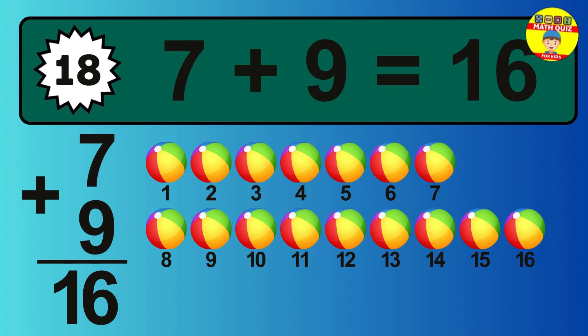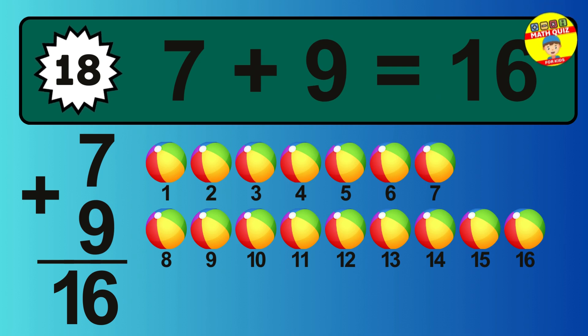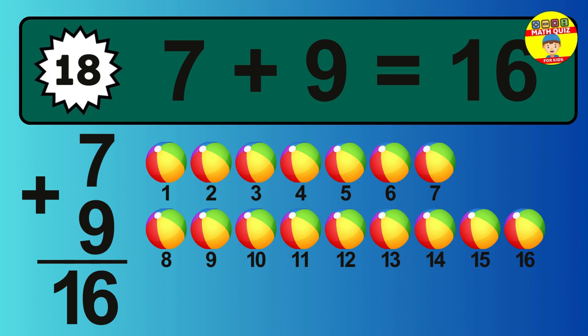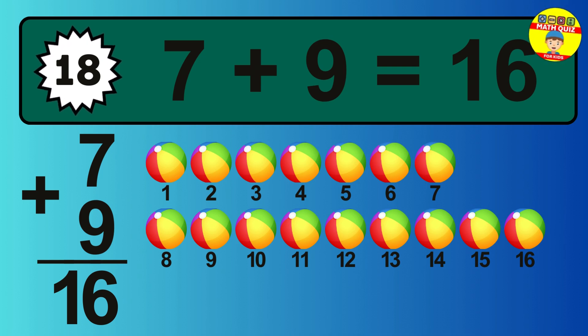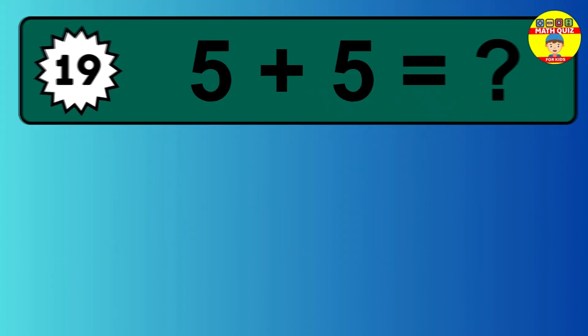Let's count it: 1, 2, 3, 4, 5, 6, 7, 8, 9, 10, 11, 12, 13, 14, 15, 16. So the answer is 7 plus 9 is 16.